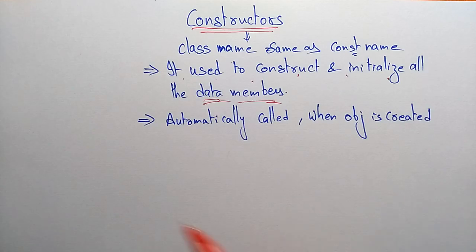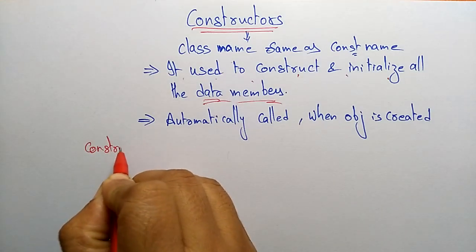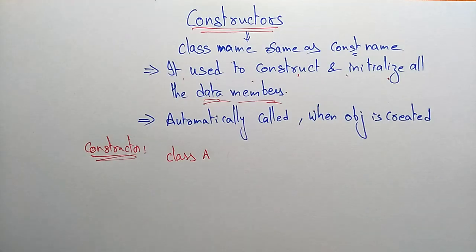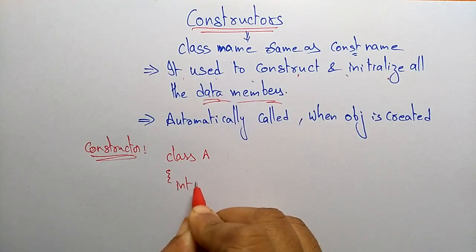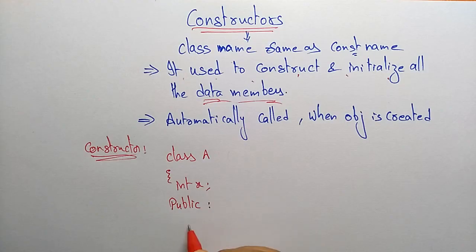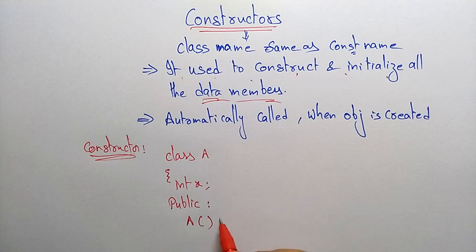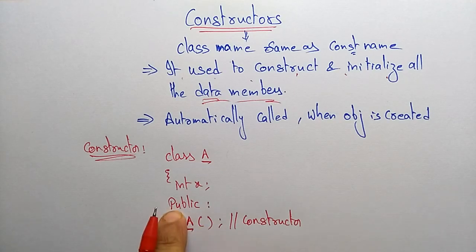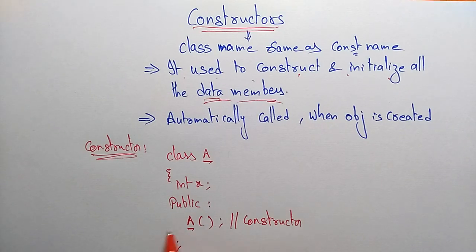Let us see the structure of a constructor program. Suppose class A — here A is the class name, int x is the data member, and public A is the constructor. Notice that the class name is the same as the constructor name. The data functions are declared as public, so public A with no parameters — this is a constructor.